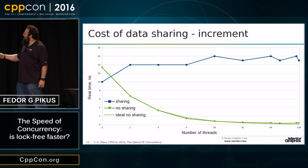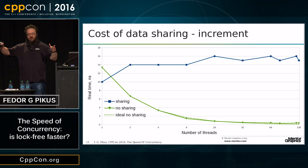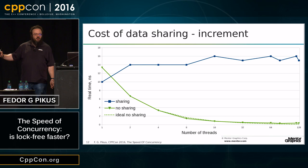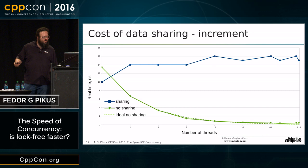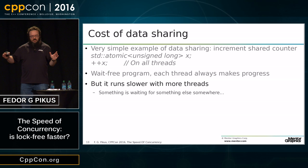The blue line is sharing — all threads incrementing the same atomic. The other line that goes down is no sharing — each thread has its own atomic. The dashed line is ideal: performance at one thread divided by the number of threads. Without sharing, it's embarrassingly parallel. With sharing, it's a wait-free program, but not only does it not scale — it actually gets worse with the number of threads. Just because it's wait-free, it works in a fixed number of steps, but not necessarily in a fixed amount of time. Something, somewhere, is waiting for somebody.